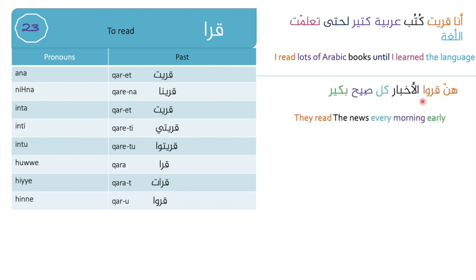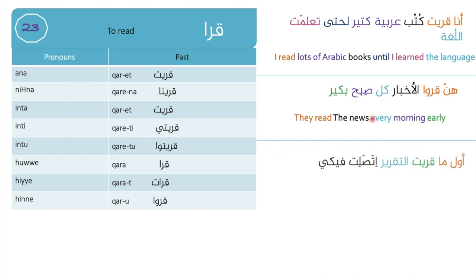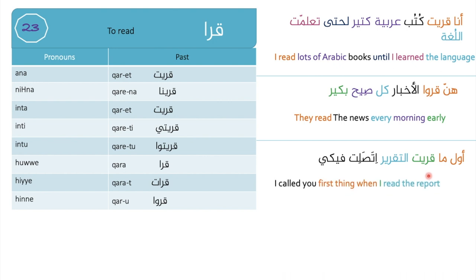Second example: 'Henne aru l-akhbar kil-sobach b-kir' — they read the news every morning early. Third example: 'Awal ma arayt al-taqrir' — as soon as I read the report. 'Al-taqrir' means the report.